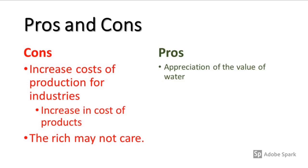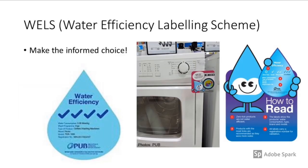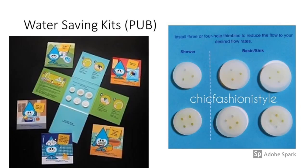The second method for reducing water consumption is through education. One approach is the WELS — Water Efficiency Labeling Scheme — which uses ticks on water-consuming appliances like washing machines and dishwashers. This gives consumers information to make an informed choice. Picking a machine with more ticks (higher efficiency) can save hundreds of dollars in water costs over the course of a year.